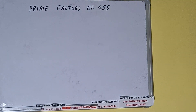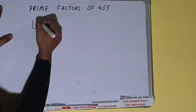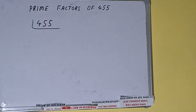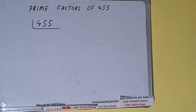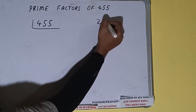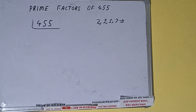Hello friends, in this video I'll be helping with the prime factors of the number 455. So let's start. First of all, we need to write the number. The next thing we need to know is what prime numbers are — prime numbers are numbers that are divisible by one and the number itself, like 2, 3, 5, 7, and so on.